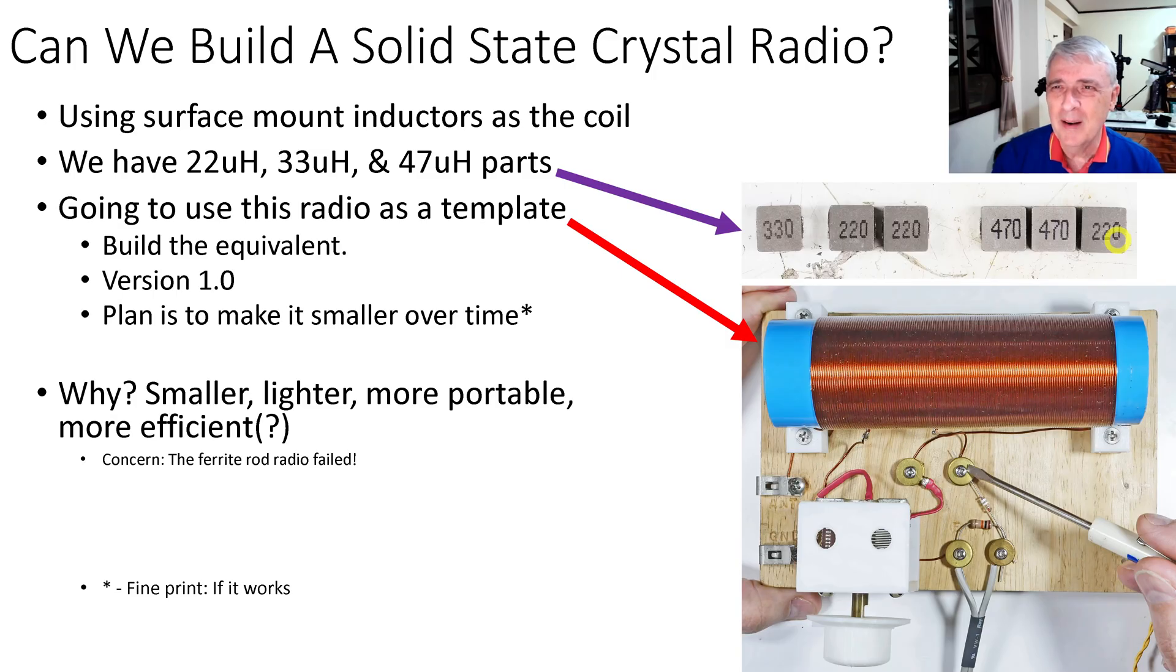This is the plan. We are going to take these surface-mount inductors, replace this coil, and we have these parts: 22 microhenry, 33 microhenry, and 47 microhenry parts over here.